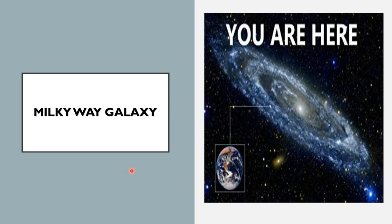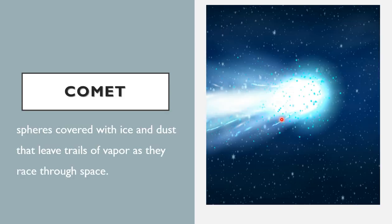The universe is full of millions of galaxies. Our solar system, where our Earth is, is part of a galaxy named the Milky Way galaxy. Our Earth sits in the solar system at the edge of the Milky Way galaxy. There are most probably other solar systems within the galaxy as well.